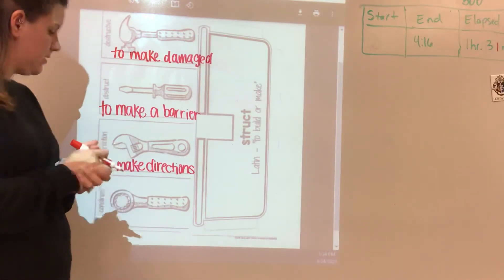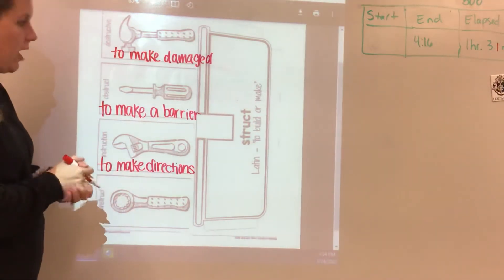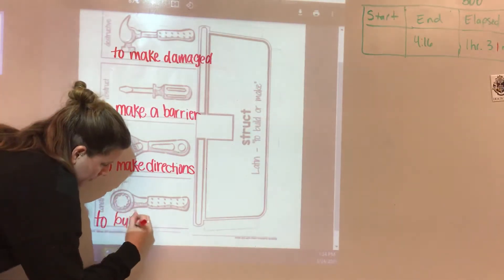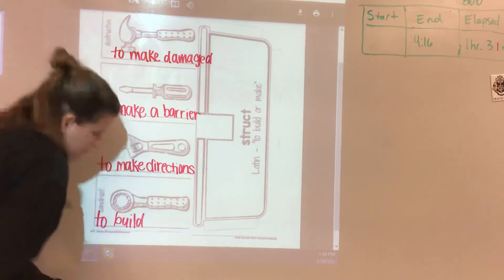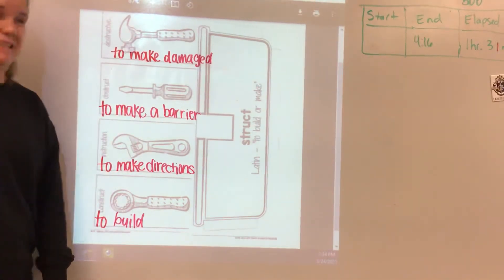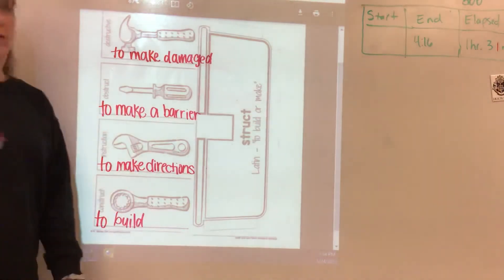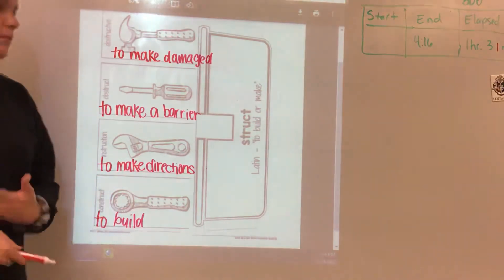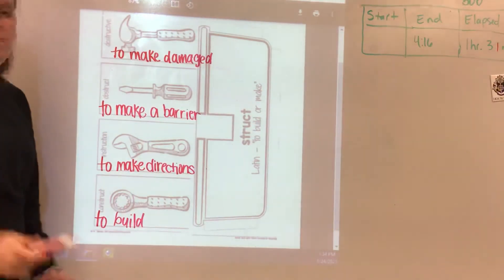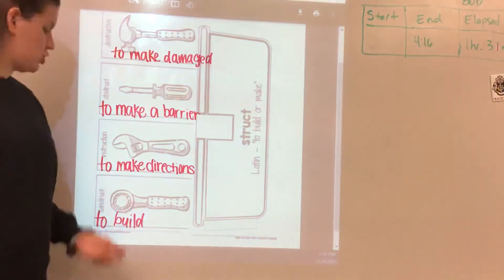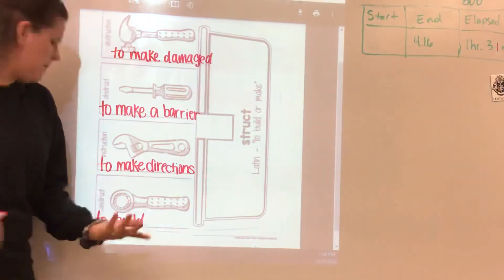And the last one is construct, and this is to build. I'm just going to write to build because that's what construct is. I'm not going to tell you what it is because you could build anything. You could build Legos. You could build a house. You could build a car. You could build a boat. You could build a computer or an app. You can even build an app. So construct means to build. I would say maybe build or create.